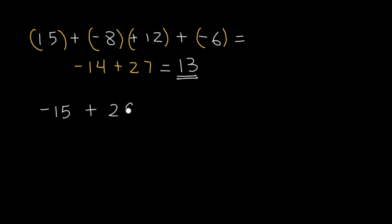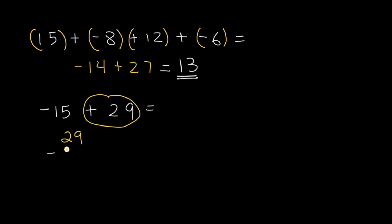Once again, we're adding a negative and a positive, so let's subtract and take the sign of the bigger number. Subtract 15 from 29, and that will be 14. For positive numbers, we don't need to add the plus sign — we just know it's there.